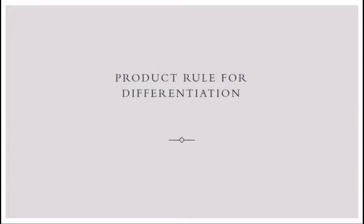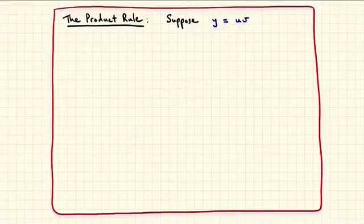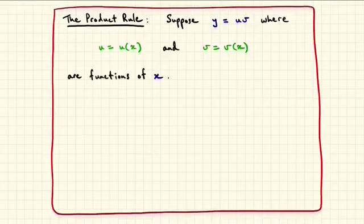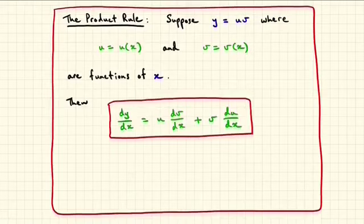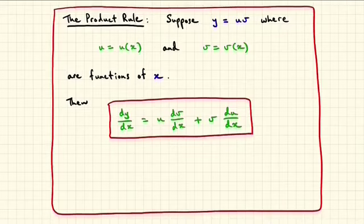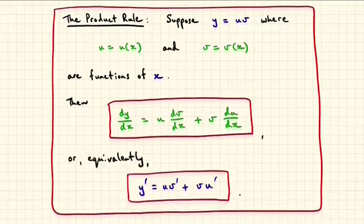Consider a function y of x which is a product of u and v, where u and v are themselves functions of x. The product rule states that the derivative of y with respect to x is u times the derivative of v plus v times the derivative of u, expressed in the Leibniz notation. Equivalently, we can use the function notation with the dash to denote the derivative.